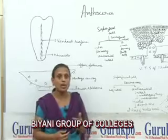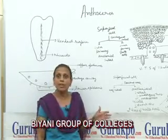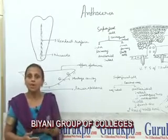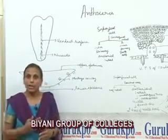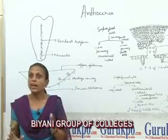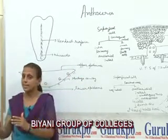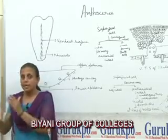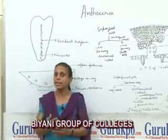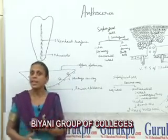This inner antheridial initial undergoes two vertical divisions at right angles to each other to form four cells. These four cells again divide transversely to form two tiers of four cells each. The cells of the lower tier form the stalk, and the cells of the upper tier form the body of the antheridium. Each cell of the upper tier again divides transversely to form the octant. Each cell of the octant divides by a curved periclinal division to form eight primary jacket cells and eight androgonial cells. The androgonial cells give rise to androcyte mother cells, which undergo regular divisions to form androcytes. Each androcyte metamorphoses into a biflagellate antherozoid.